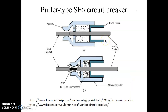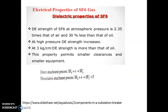This is the proper type of SF6 circuit breaker. How does SF6 gas quench the arc? SF6 gas is an electronegative gas. Here we are showing the dielectric attachment process and the associated attachment process through these two equations.